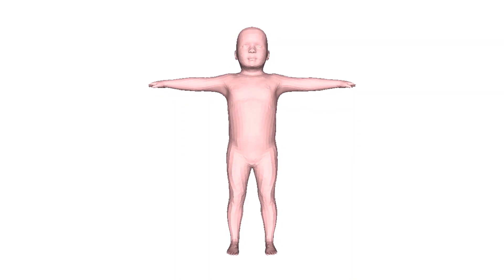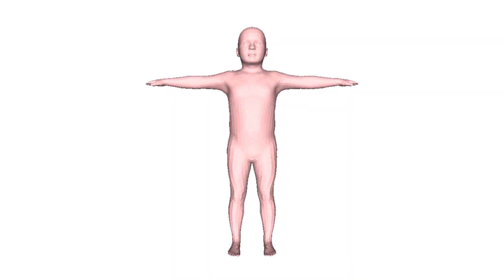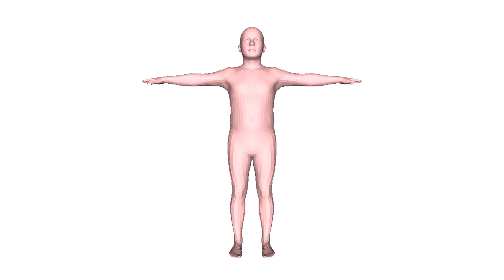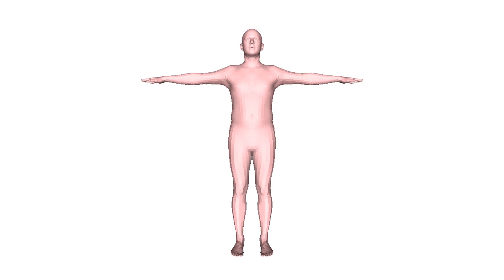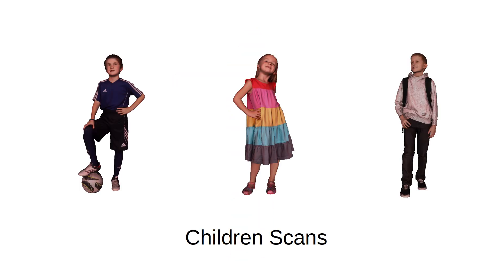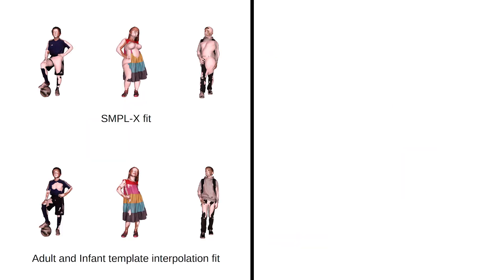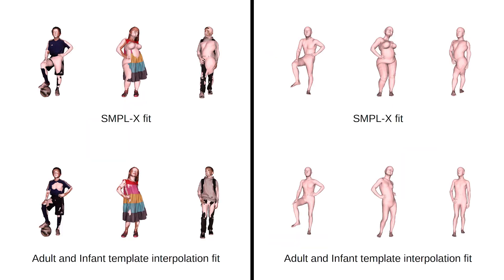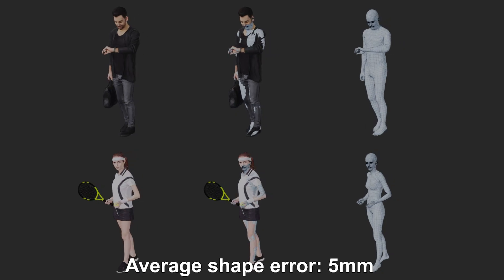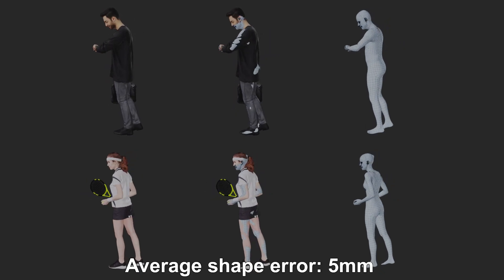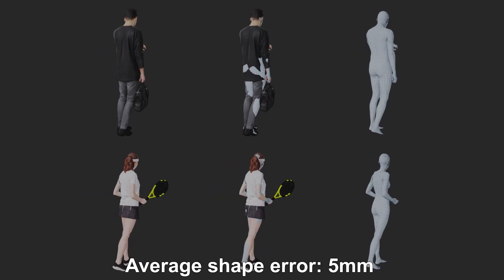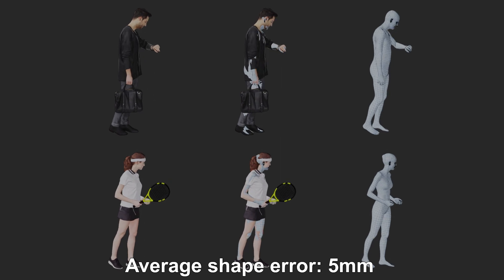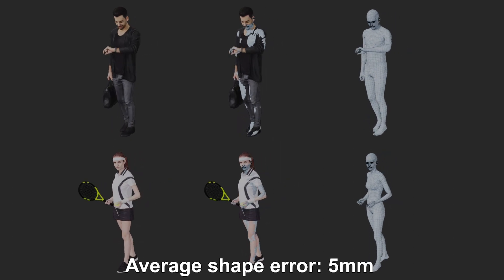To fit scans of children, we extend the SMPL-X shape to include a new shape direction that interpolates between adult and infant body shapes. Optimizing this extra interpolation parameter, along with the standard shape parameters, gives significantly better shapes and poses for children. The reconstructed SMPL-X fits yield, on average, 5 mm of shape error and can be considered as ground truth.